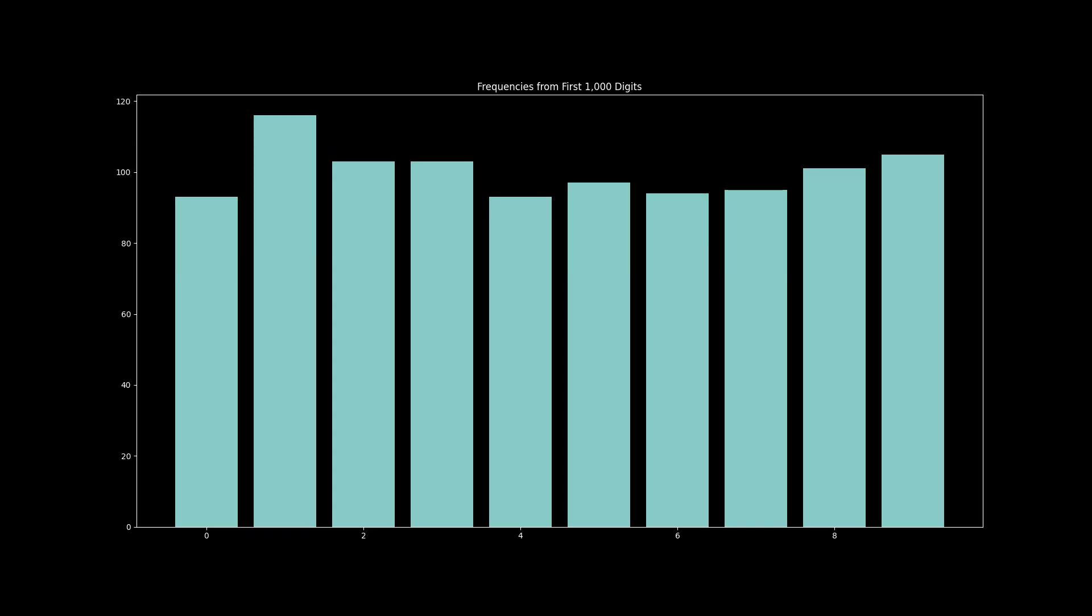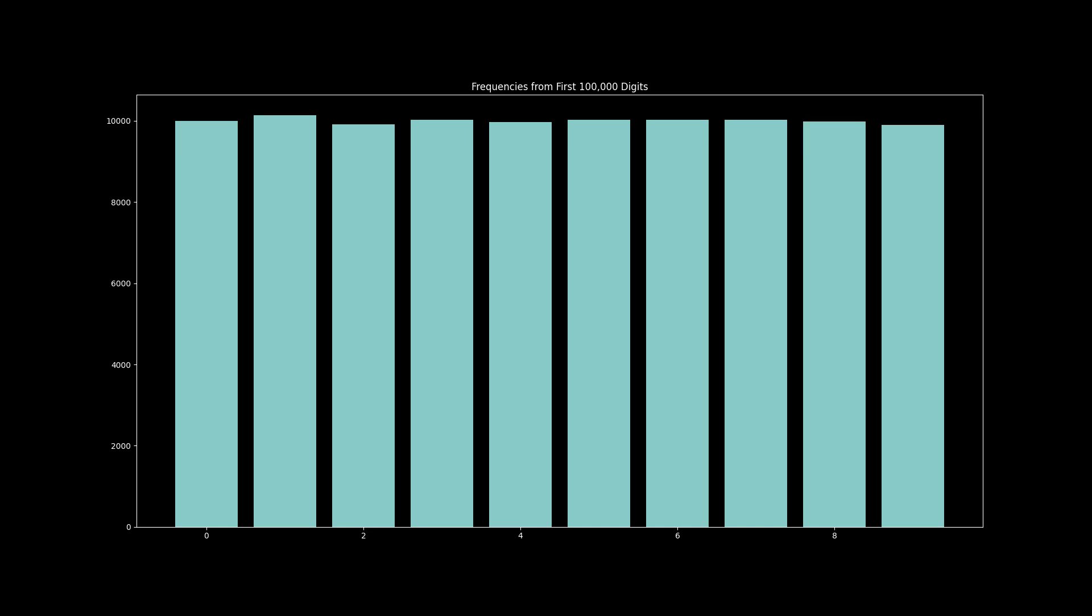Just like with the random digits, they're a little bit uneven at first, but then converge over time to an even distribution.